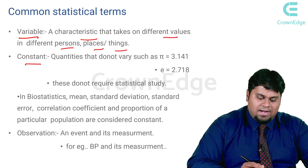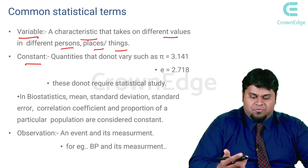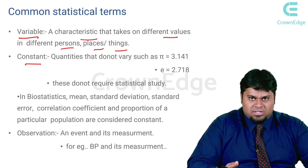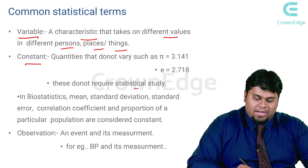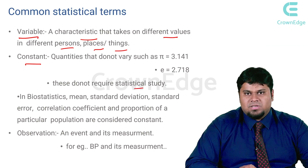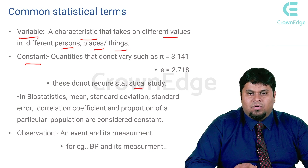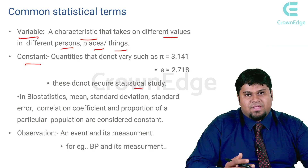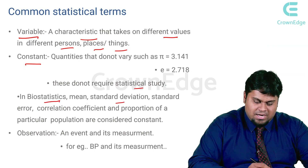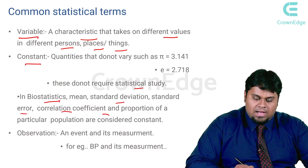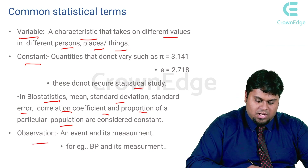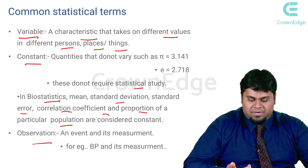A constant, on the other hand, is something which does not vary — for example, the value of pi. These are given in mathematical and empirical formulas, so they do not require any kind of statistical study. Variables most commonly used in biomedical research include blood pressure, salivary flow, and rate of flow per minute. In biostatistics, the mean, standard deviation, standard error, correlation coefficient, and proportion of a particular population are all considered to be constants.